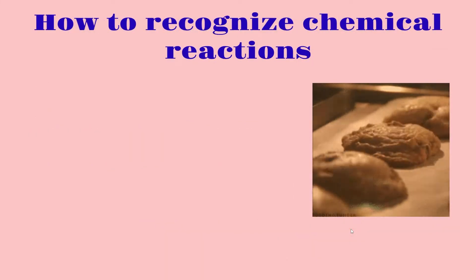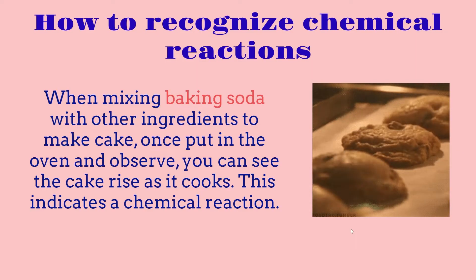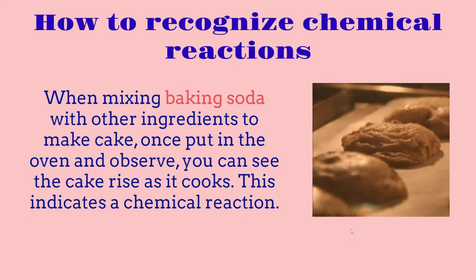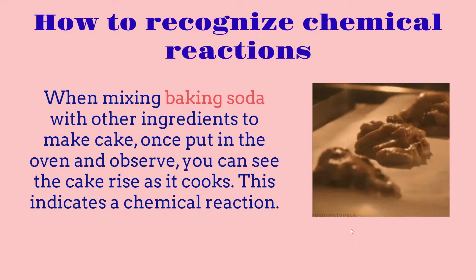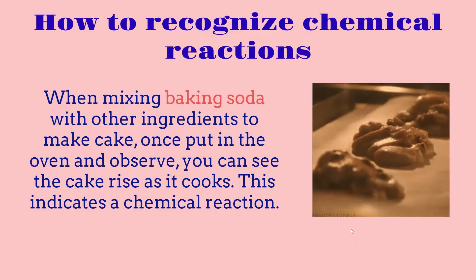How can we recognize chemical reactions? Taking the example of baking soda: when you mix baking soda with other ingredients to make a cake and put everything inside the oven, you can observe after some time the cake starting to rise as it cooks, and this indicates a chemical reaction. Basically, if you can see a change inside a substance as it's happening, that could indicate a chemical reaction.